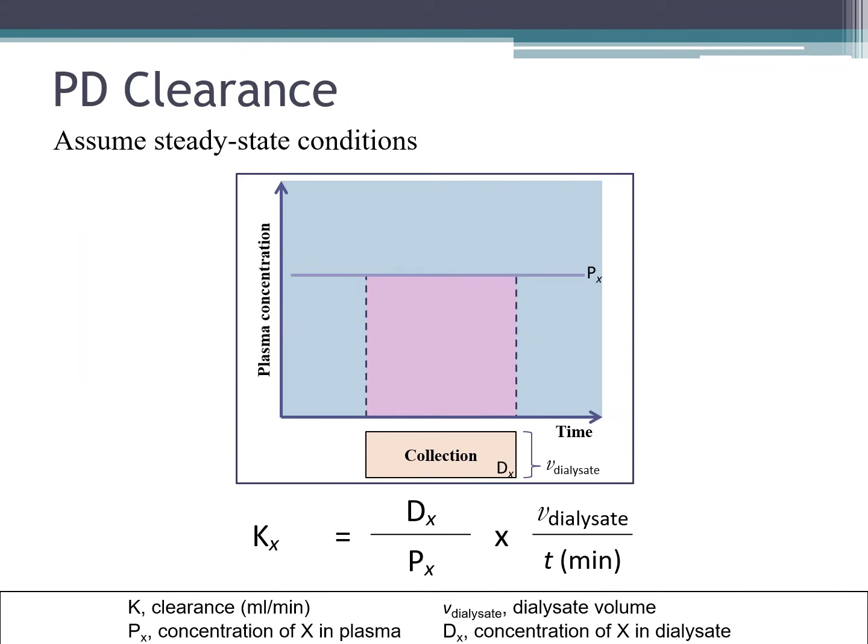If you are calculating peritoneal dialysis clearance, instead of a time collection of urine, this will be a time collection of the peritoneal dialysate. And K will be calculated by the dialysate divided by the plasma concentration of the substance multiplied by the volume of dialysate divided by the time over which the dialysate was collected.